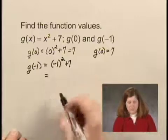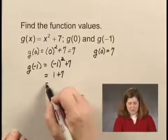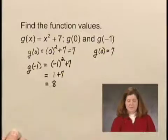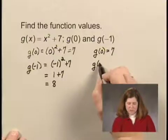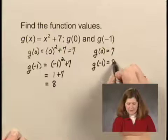Negative 1 squared is 1, so I have 1 plus 7, or 8. So I can say that g of negative 1 equals 8.